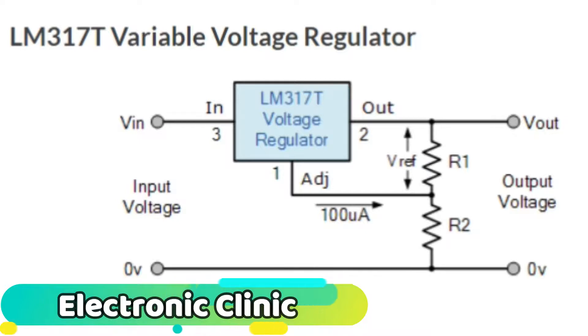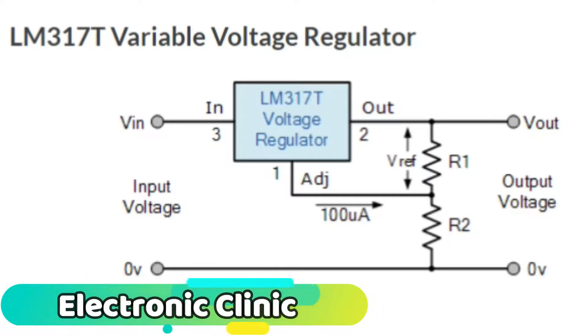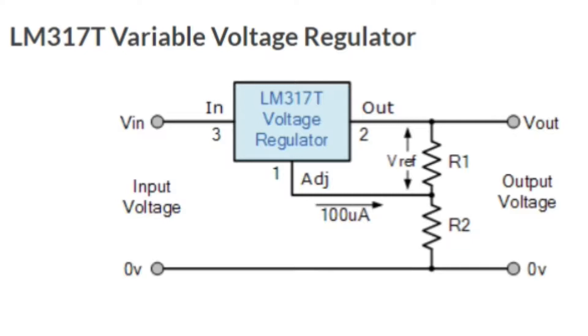The reference produced between the output and adjustment terminal. The adjustment terminal current is a constant current of 100 microamps. Since the reference voltage across the resistor R1 is constant, a constant current I will flow through the other resistor R2.